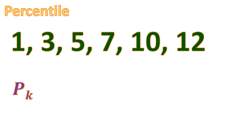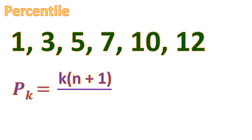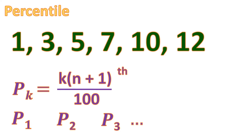Next, we're going to find the percentile of this given data. The percentile divides the data by 100. It's the same idea as the decile — even with fewer than 100 numbers, there are invisible numbers in between. The formula is K times (N plus 1), all over 100. K ranges from 1 to 100. P100 is unnecessary to solve since it's the last number. We only solve P1 through P99.